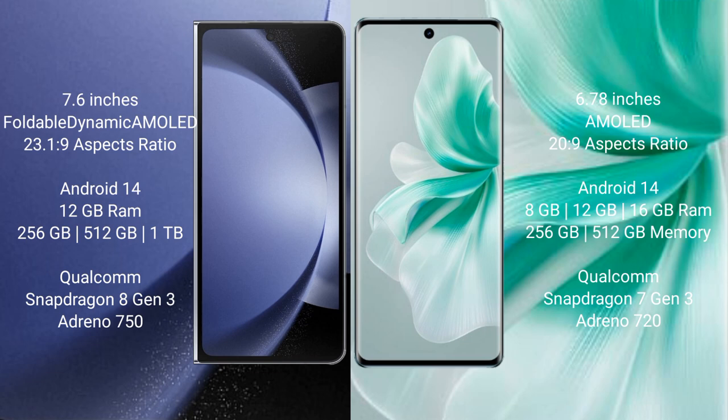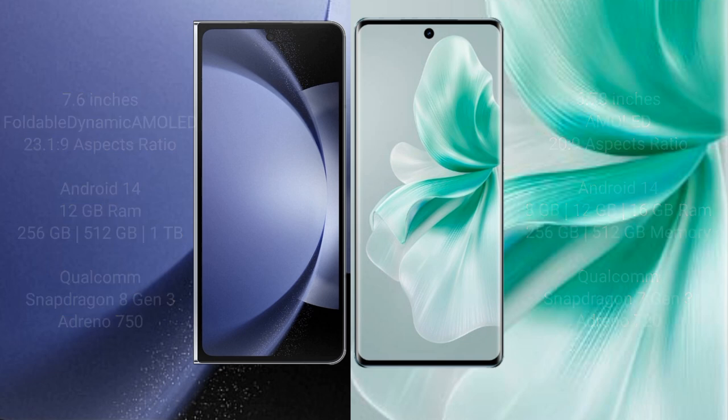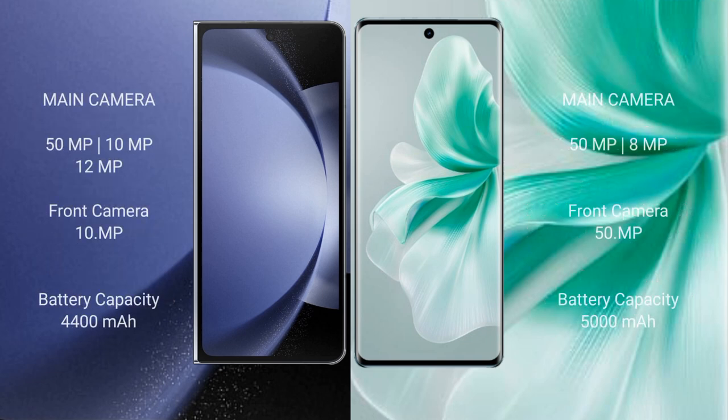Samsung Galaxy Z Fold 6 features a triple rear camera setup: 50MP plus 10MP plus 12MP, with a 10MP front camera. Vivo Y18 features a dual rear camera setup: 50MP plus 8MP, with a 15MP front camera.